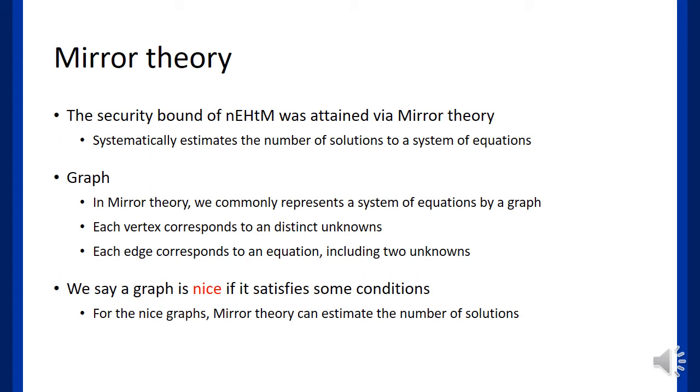Generally, an affine system identified with an arbitrary graph may have contradiction. Therefore, we define a property called nice, which guarantees no contradiction, then it makes possible to count the number of solutions. We will talk about this theory more specifically in the overview of the proof.